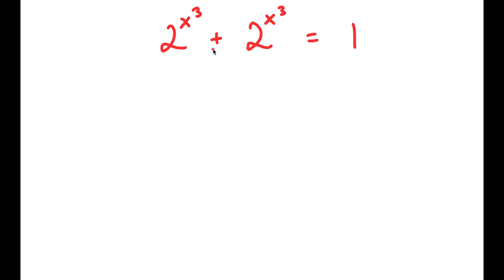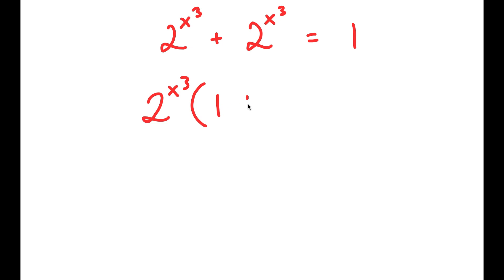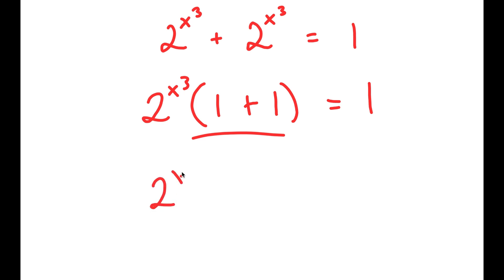To start off, I'm going to factor out from the left-hand side. I'm going to factor out 2 to the power of x to the power of 3, because it appears twice. So now I get 2 to the power of x to the power of 3, times 1 plus 1 — since dividing gives 1 — is equal to 1. And 1 plus 1 is 2, so I get 2 to the power of x to the power of 3, times 2, is equal to 1.